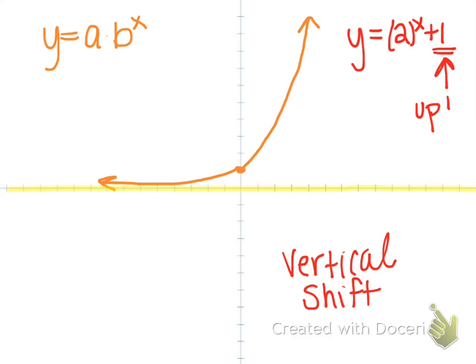I'm going to take this orange parent function, shift it up 1, and now my asymptote changed. My asymptote also went up and is now at 1. This is my new asymptote that the line gets really close to but doesn't touch.